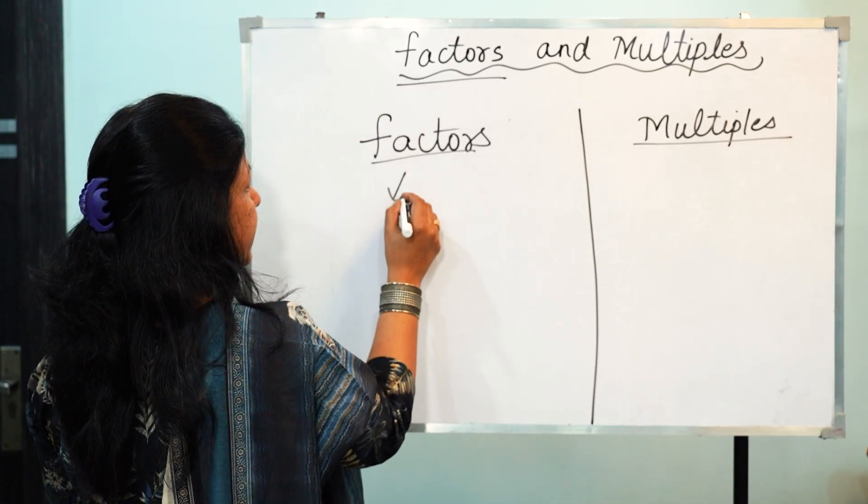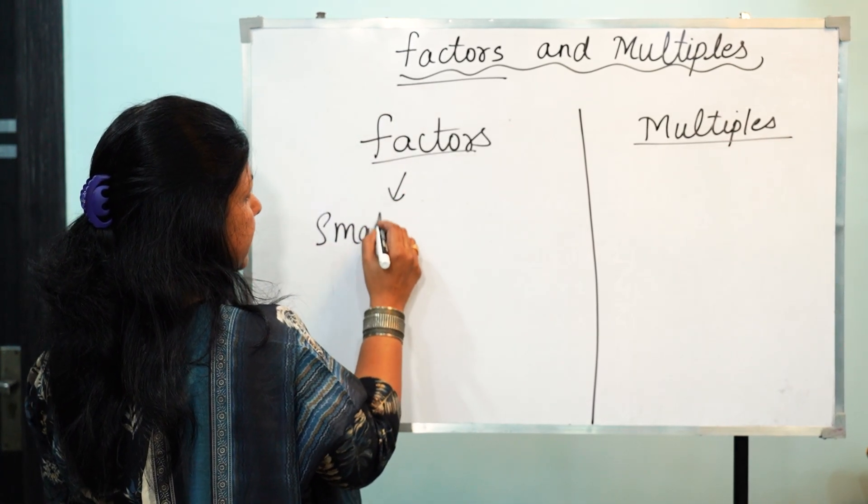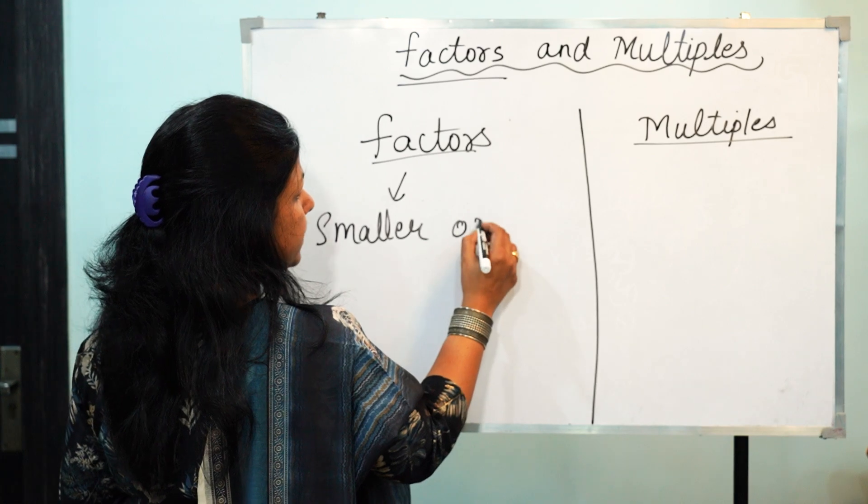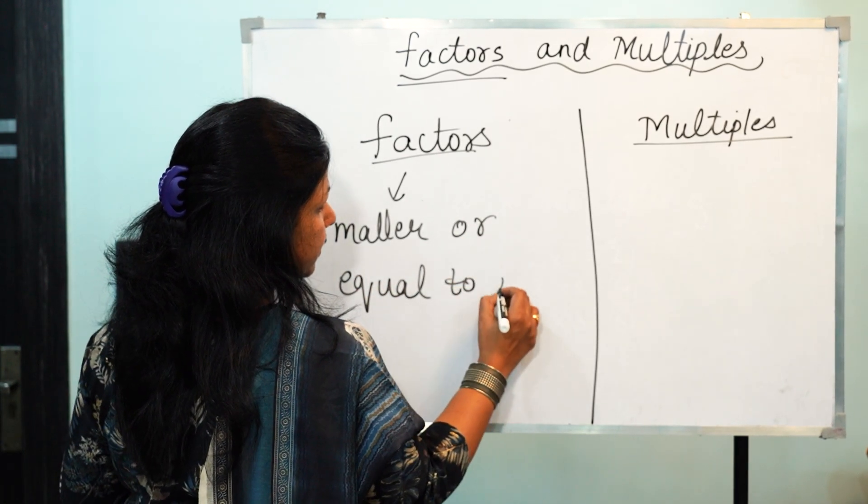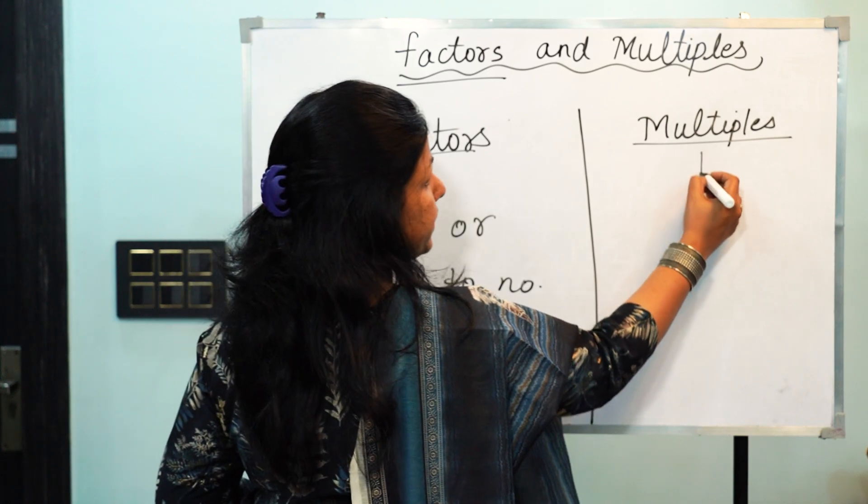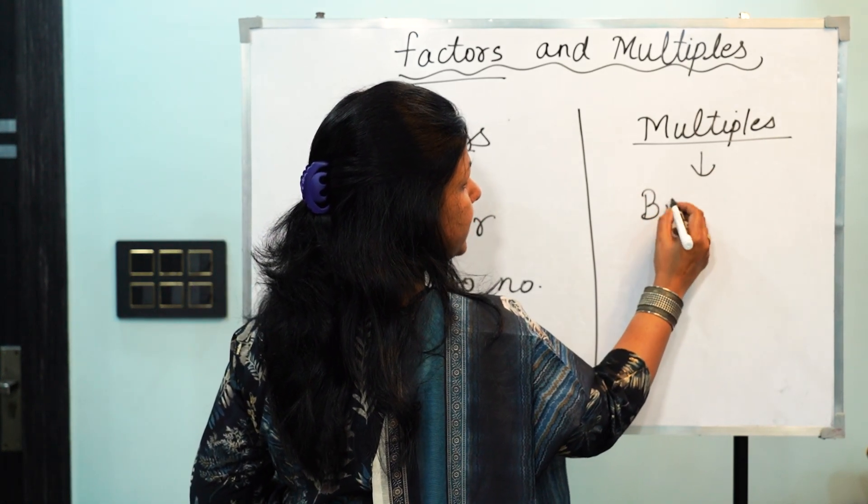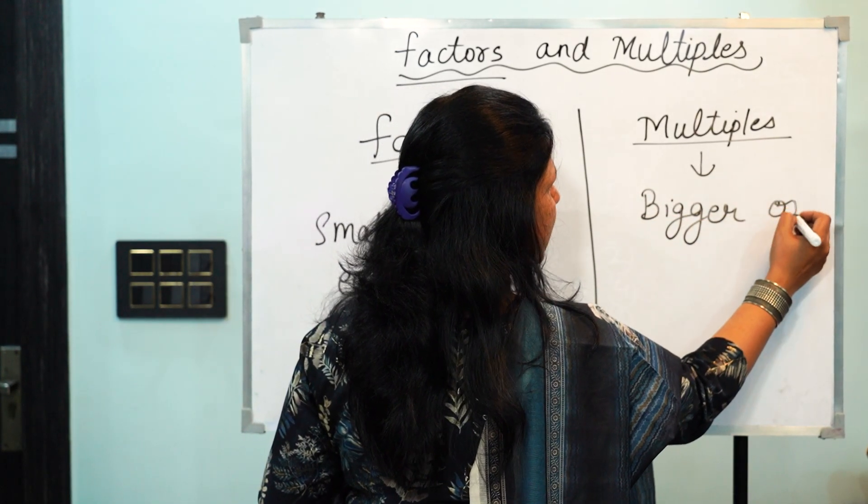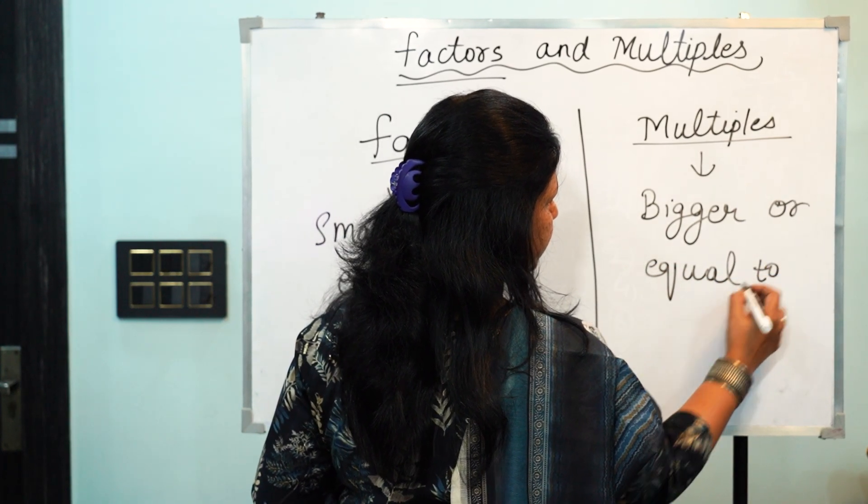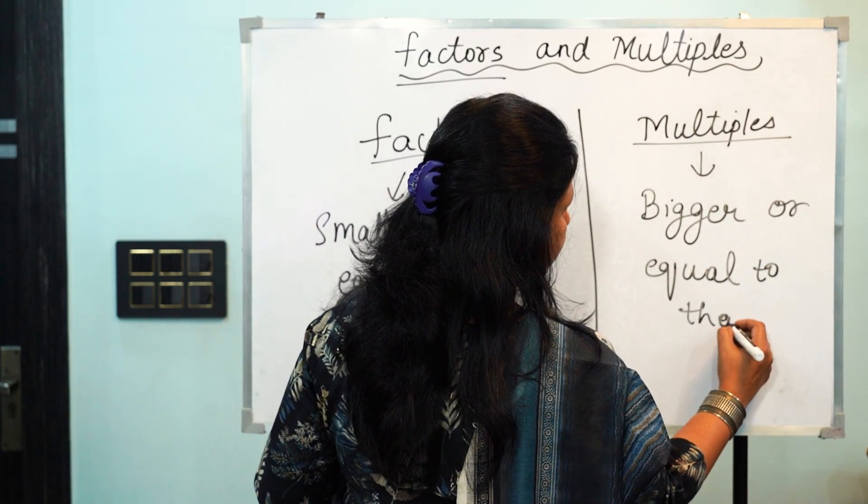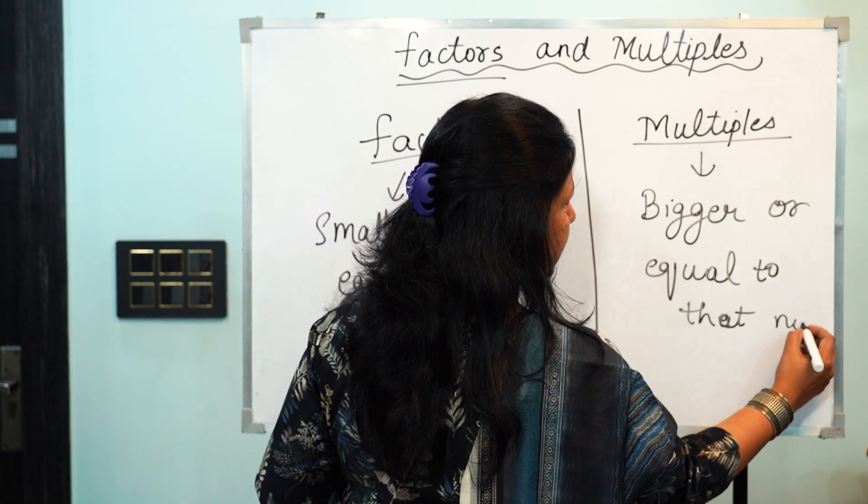Factors are always smaller than the number, smaller or equal to the number. Right? And multiples are always bigger than, bigger or again equal to that number. Right?